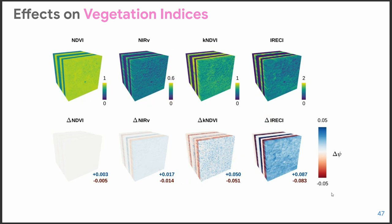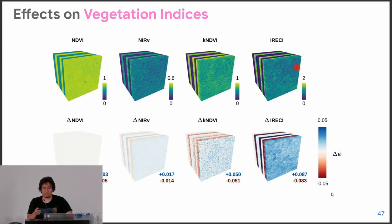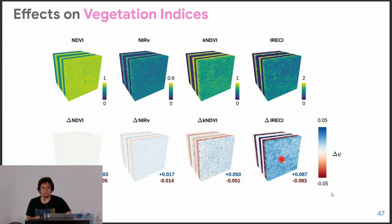Not just in reflectance itself — if you compute derived products like vegetation indices, there will also be an effect depending on the index. For example, NDVI is almost not affected because it normalizes everything. But other indices that are not as normalized will show greater effects. For example, the NIRv (near-infrared reflectance of vegetation) is a bit more affected. The kNDVI shows more affected points in space and time. And the Inverted Red-Edge Chlorophyll Index — which uses all three red edge bands in combination with near-infrared — shows quite big differences between the index using NBAR versus surface reflectance.